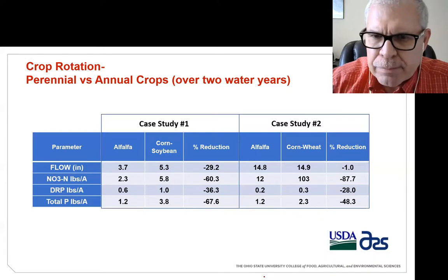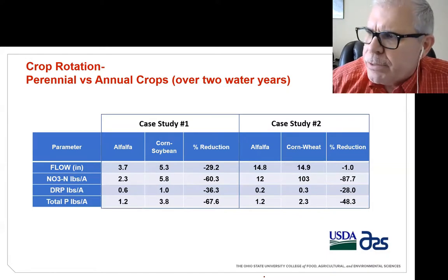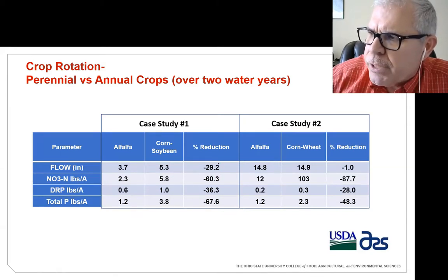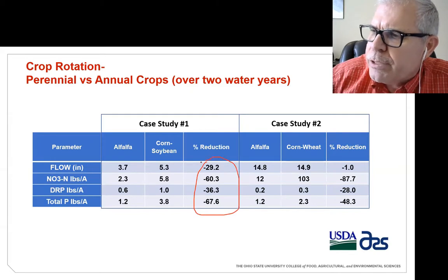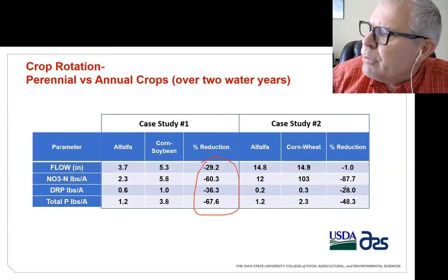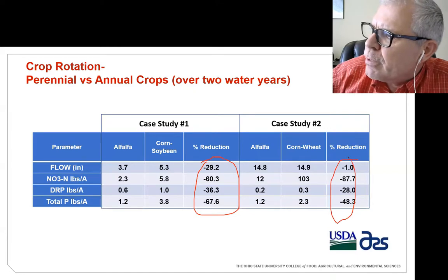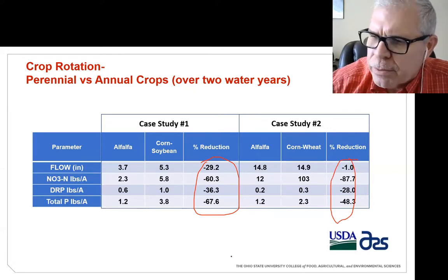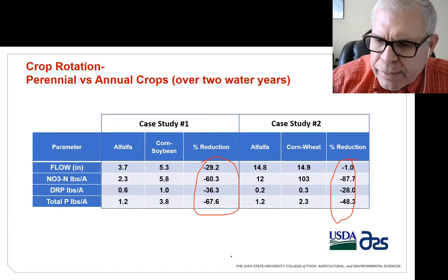On livestock farms, we often have hay or alfalfa crops. A couple of case studies comparing alfalfa versus an annual rotation show pretty good reductions in nitrate, DRP, and total phosphorus by having a perennial crop in the rotation. Perennial crops certainly give us another way to manage water quality.